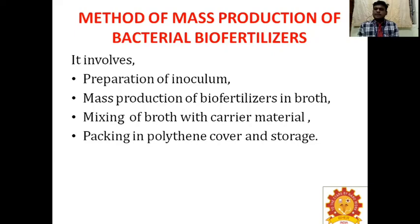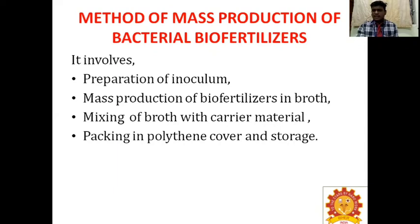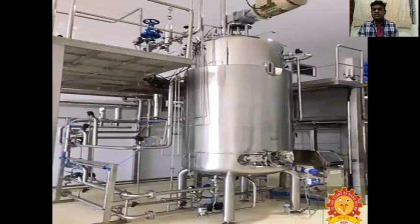Carrier materials such as lignite, peat soil, and talcum powder are used — do not add any flavor to the talcum powder. The biofertilizer broth is packed in polythene covers for storage. A fermenter is used for large-scale production of biofertilizers. Both fully automated and manually operated fermenters are available.